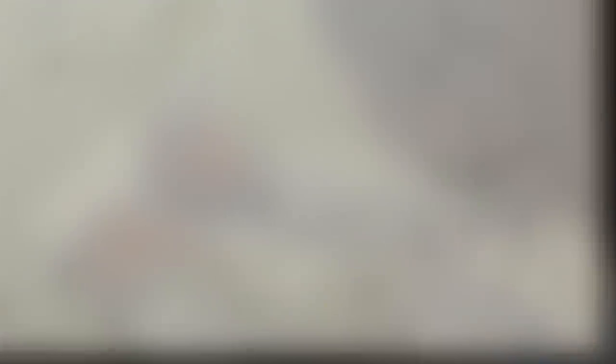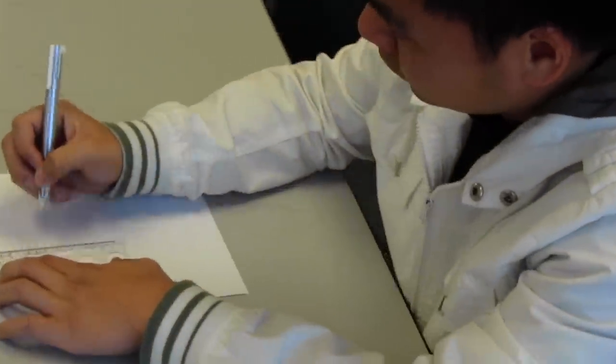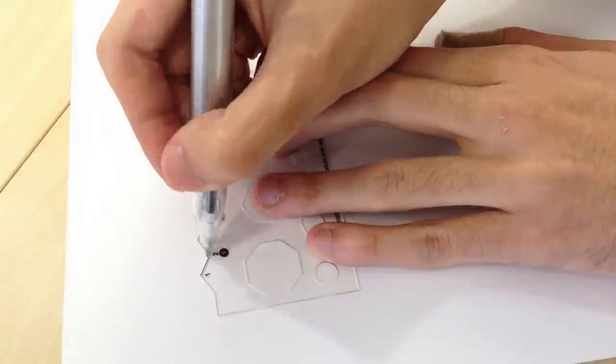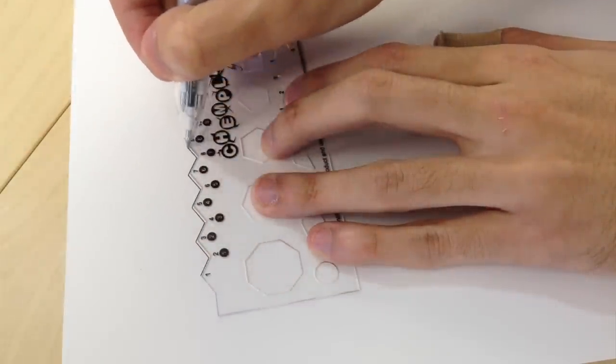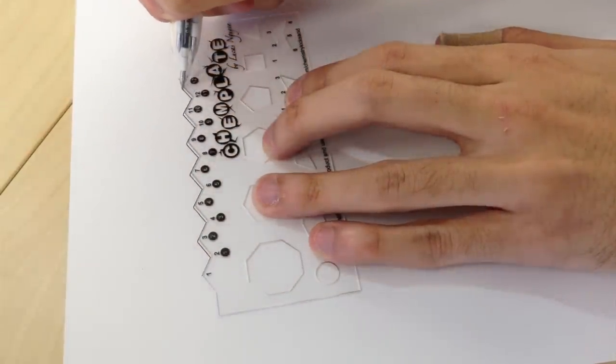With ChemPlate you can draw a perfect long carbon chain in the blink of an eye. ChemPlate allows you to draw up to 16 carbons at a time, which is more than a sophomore organic student will usually need.